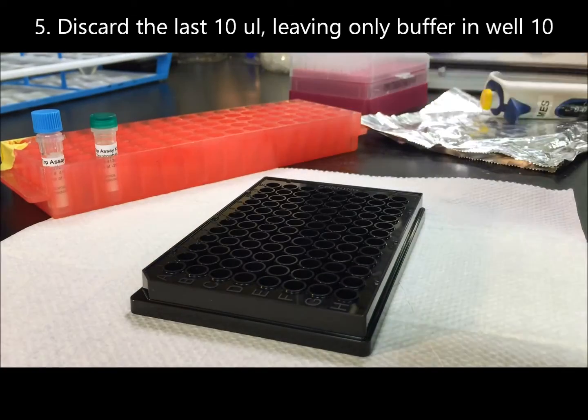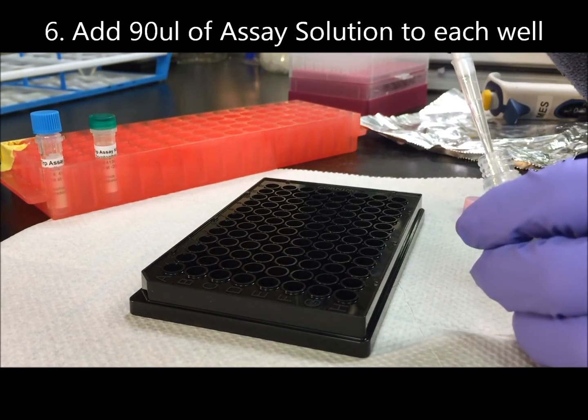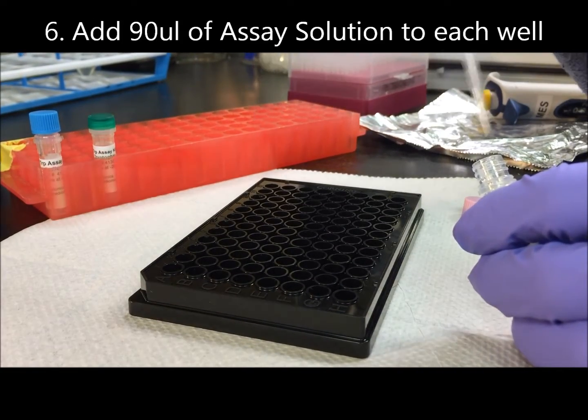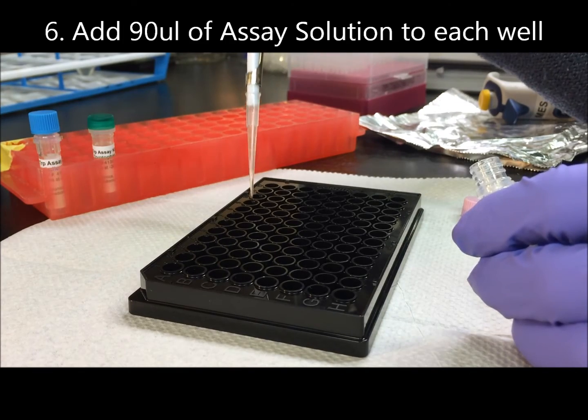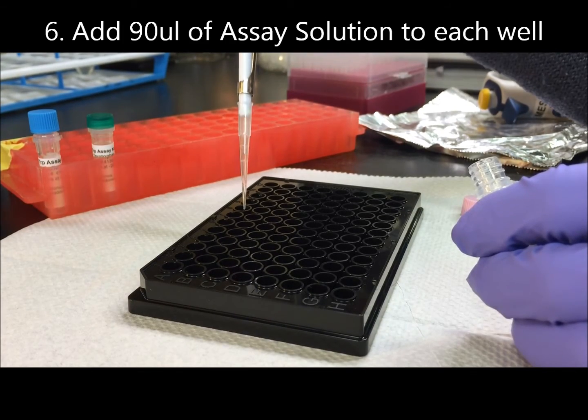After mixing in well 9, discard the last 10 microliters. Starting from the lowest concentration, add 90 microliters of assay solution to each well.